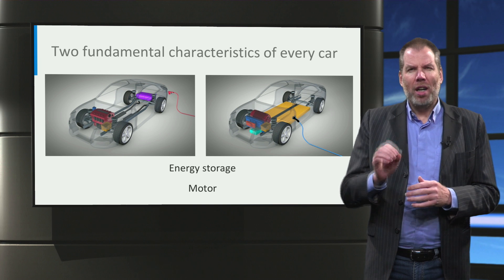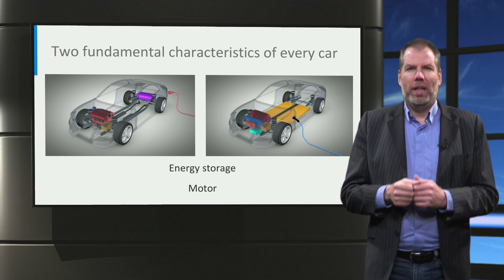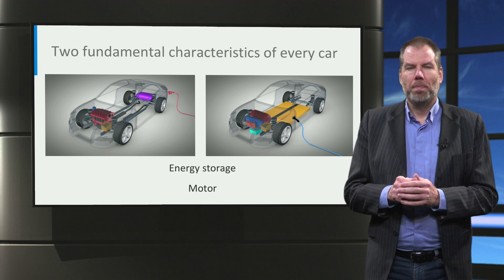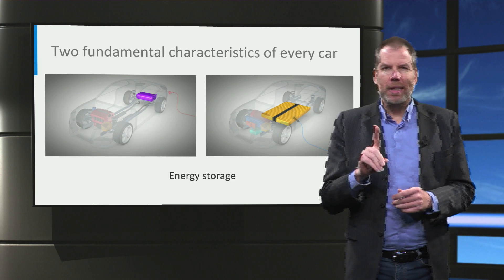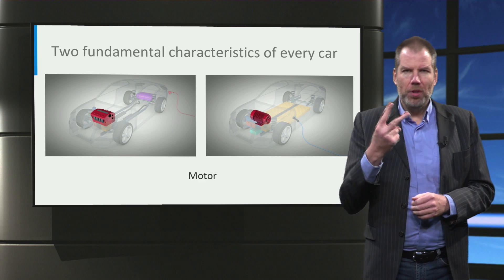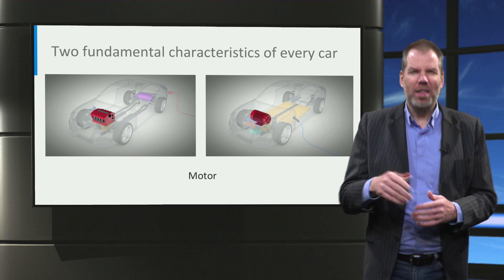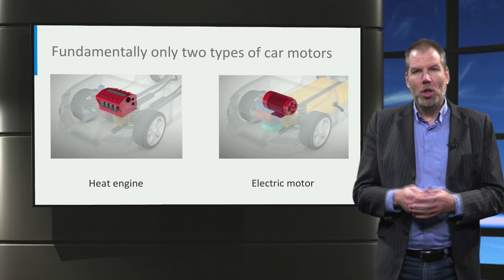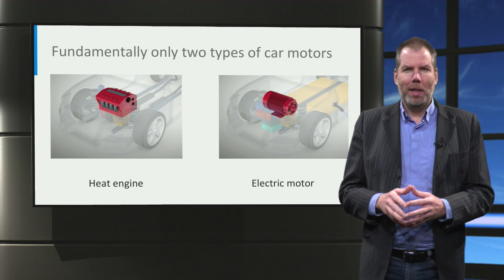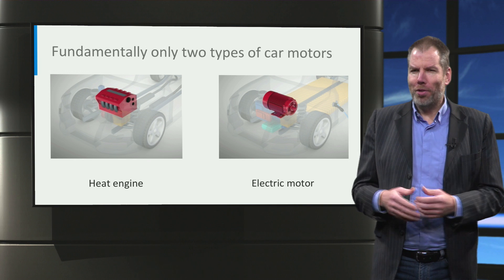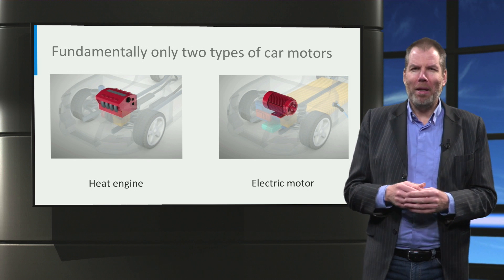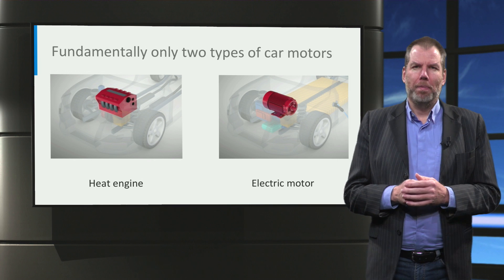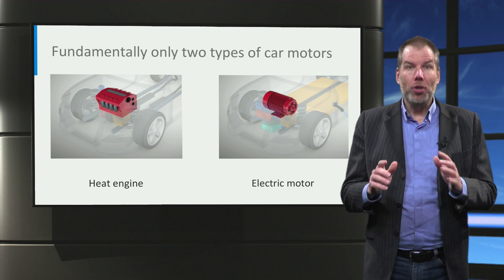In essence, there are two fundamental characteristics that all cars have that you have to understand. If you do, as I said, everything else falls into place. The first fundamental is energy storage. The second fundamental is the motor. But let's start with the motor. The motor converts potential energy into kinetic energy. You might think there are many types of motors out there, but in essence there are only two types of motors, and this has been true since the beginning of human history — so pay attention, because this is information you can use forever.